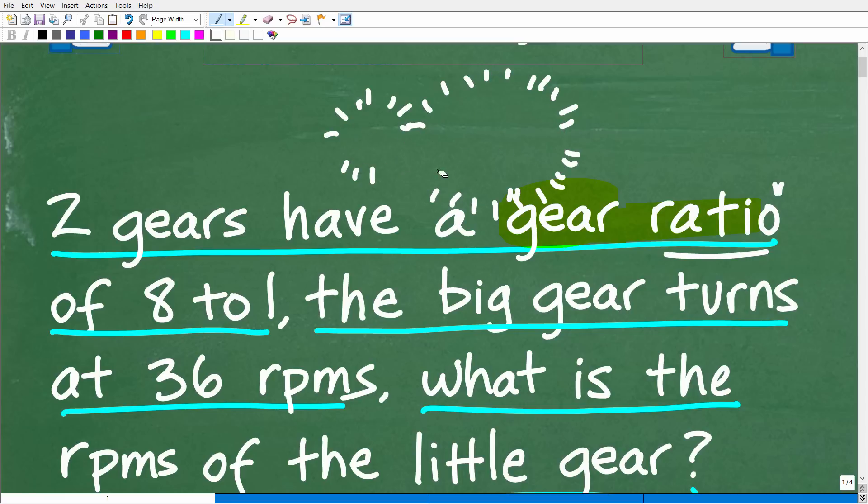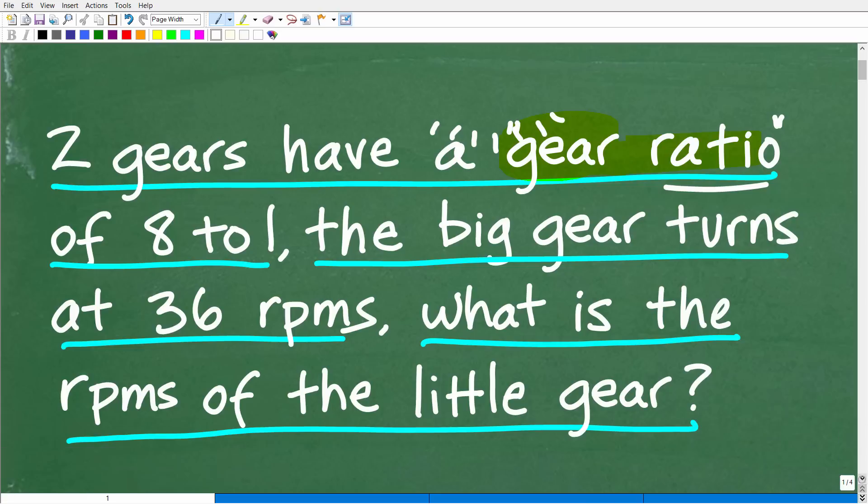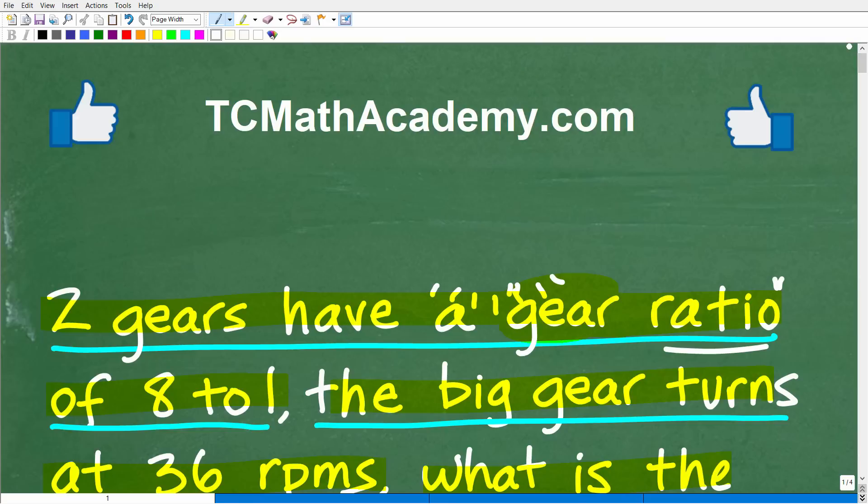So let's read it one more time. Two gears have a gear ratio of 8 to 1, the big gear turns at 36 RPMs, what is the RPMs of the little gear? If you have the answer, put that into the comments section. I'll show you the answer and the solution in just one second. But first, let me quickly introduce myself. My name is John and I have been teaching middle and high school math for decades. If you need help learning math, check out my math help program at tcmathacademy.com. You can find a link to that in the description below. And if this video helps you out or if you just enjoy this content, make sure to like and subscribe.